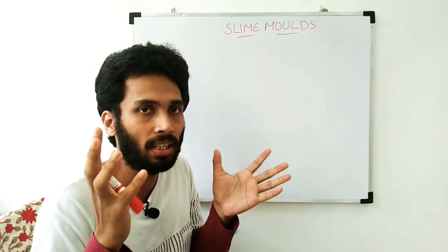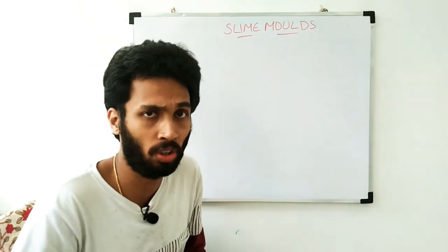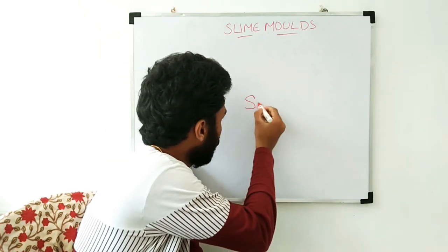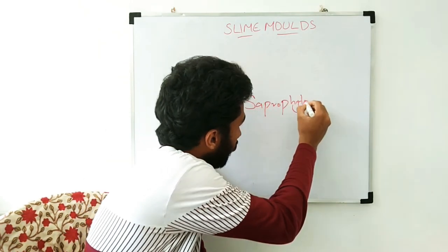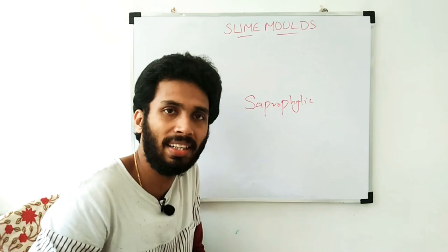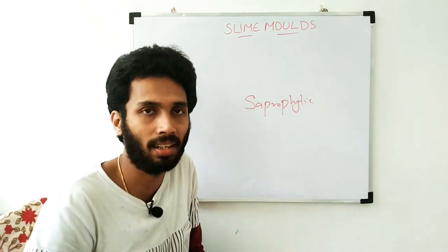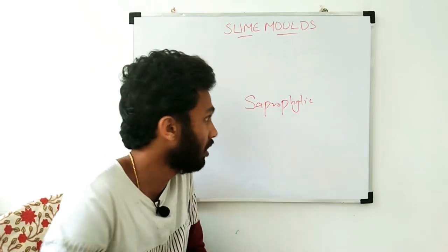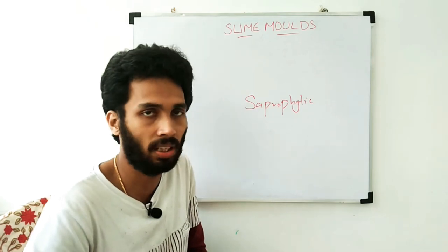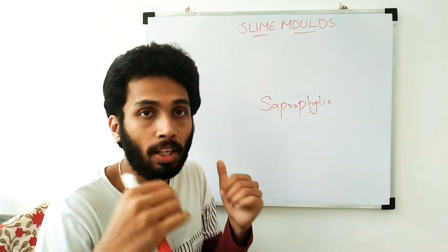Now, the slime mold used to be saprophytic protists. Saprophytic means that they feed on dead and decaying materials. We know that they are saprophytic organisms. The slime mold used to be able to help people and children.